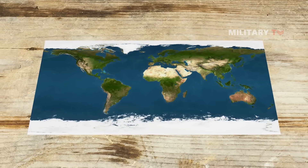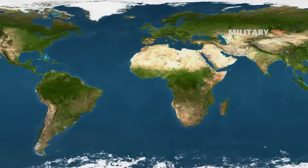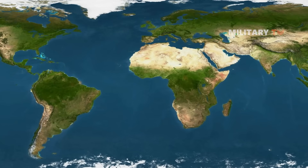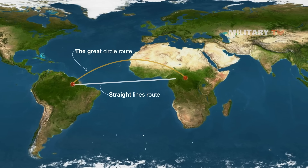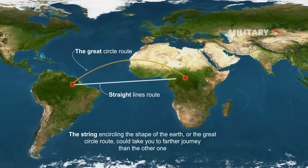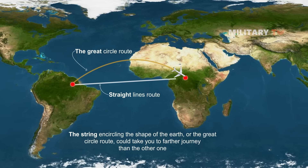If you take two strings of the same length and compare how far a Great Circle Route can take you versus a straight-line route from one point to another, the experiment will show that the string encircling the shape of the Earth — the Great Circle Route — could take you on a farther journey than the other. Thus, if we apply this logic to the flight path of an airplane, what we thought to be a longer journey chosen by the pilot was actually the most reasonable and shortest path to reach the destination.